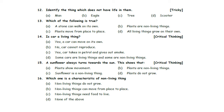Identify the thing which does not have life in it. Option A: Man. Option B: Eagle. Option C: Tree. Option D: Scooter. Option A, B, and C are living things and have life in them. The question is asking to identify the thing which does not have life — that is, they are asking to point out a non-living thing. So, Option D, Scooter, is the correct answer.